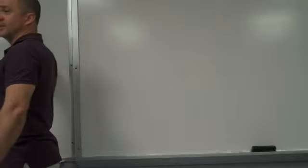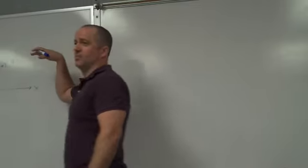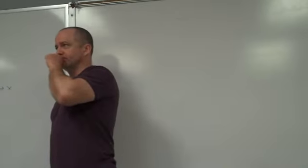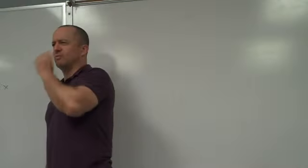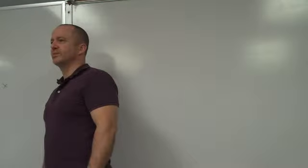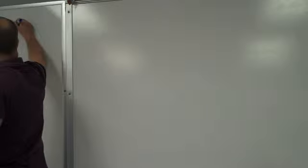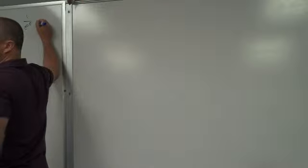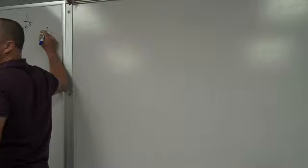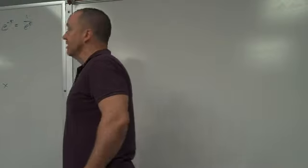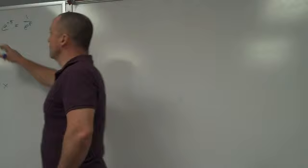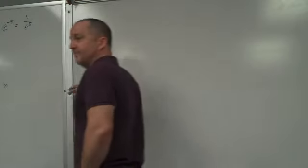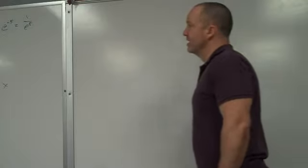If you had e to the fifth, what would it be? If I had y equals e to the fifth, that would be a horizontal line because e to the fifth is just a number. It's 2.718 raised to the fifth power. So, that would be y equals 34 or so. And e to the negative fifth would be 1 over e to the positive fifth. That'd be a really tiny fraction. And if you had y equals this, you'd have a horizontal line very close to the x-axis.